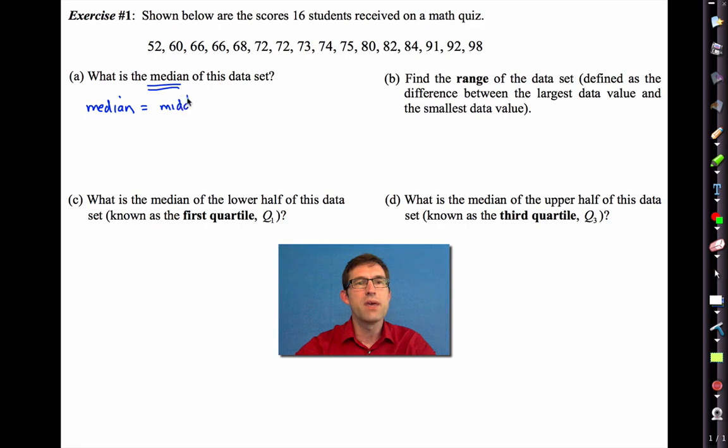The median would be considered the middle, the middle most data value. Now typically the way students do that is they kind of go in from the middle from one side and the other side. Now, if a data set has an odd number of data values, it's very clear what the middle most data value is. But 16 is not odd. It's an even number. So, in fact, 1, 2, 3, 4, 5, 6, 7, 8, right here is the middle.